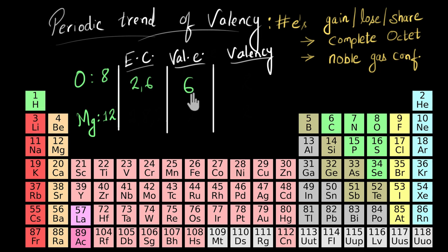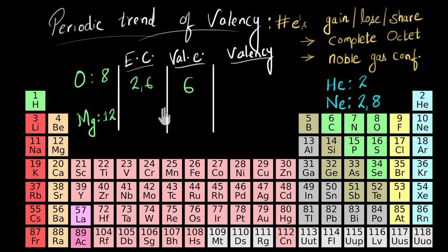Now if oxygen gains two electrons, its configuration will be 2,8 — just like the noble gas neon. Or if it loses six electrons completely, it will have only two electrons, just like the noble gas helium. So either by gaining two electrons or by completely losing six electrons, oxygen can have a noble gas configuration and be stable. In a chemical reaction, it is easier for oxygen to gain two electrons rather than lose six, so its valency is going to be two.